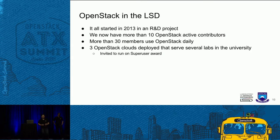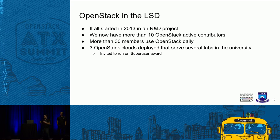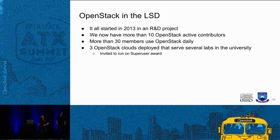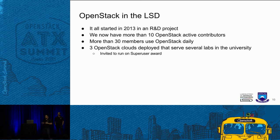Telling how we began to work with OpenStack: it all started back in 2013, where we had a strong front on cloud computing. We decided to have a new R&D project to work with OpenStack. At this moment, we have more than 10 OpenStack active contributors that work daily — most of them full-time, a few part-time. We have in our lab more than 30 members that use OpenStack daily, for development, for the SysAdmin team, and the Dev team, and also CI users of OpenStack.